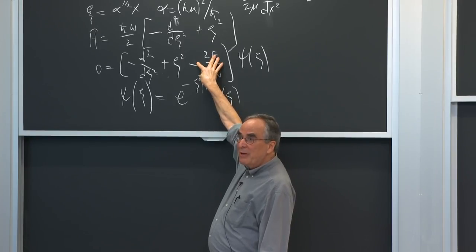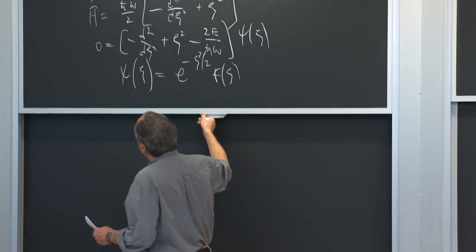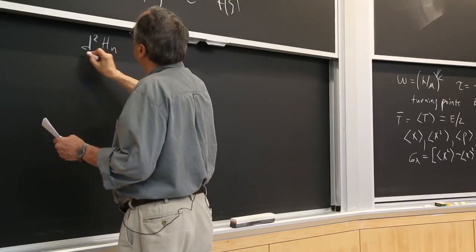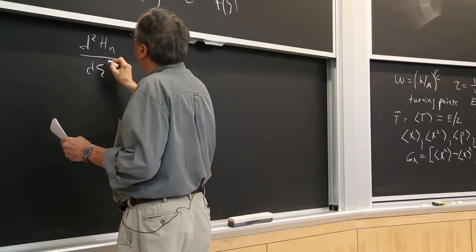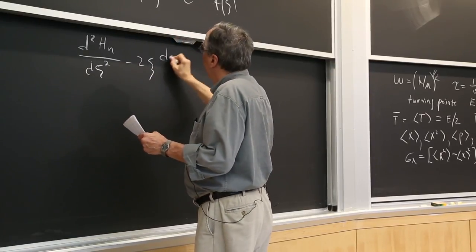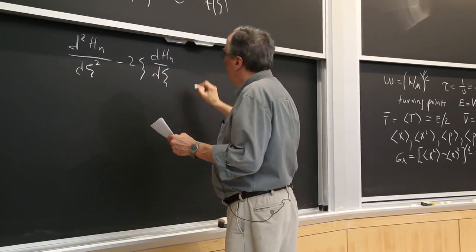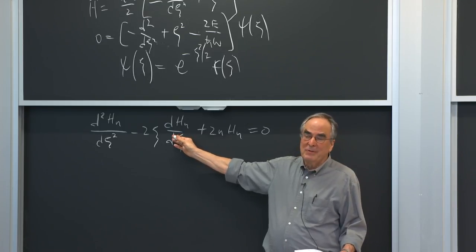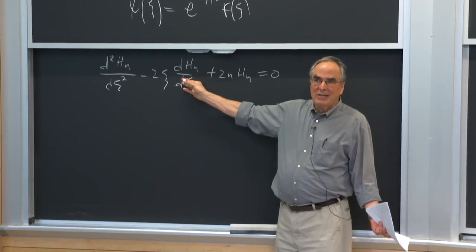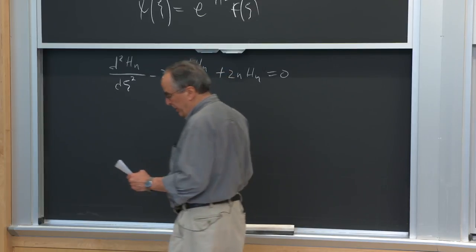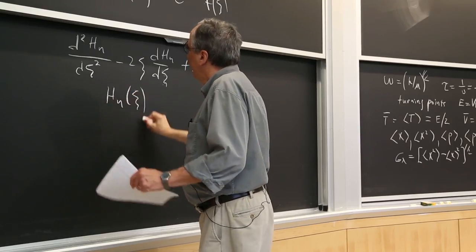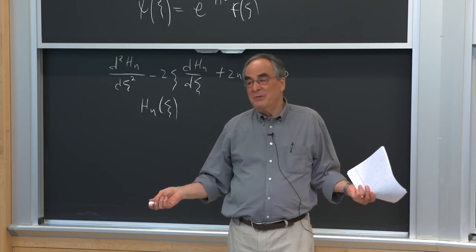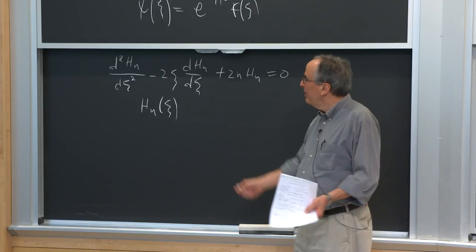We know the solution to the differential equation if the polynomial term weren't there — that's just the equation for a Gaussian. Building in the Gaussian and substituting back gives the Hermite equation: d²Hₙ/dψ² = −2ψ (dHₙ/dψ) + 2nHₙ. This is the famous Hermite equation, which generates the Hermite polynomials.